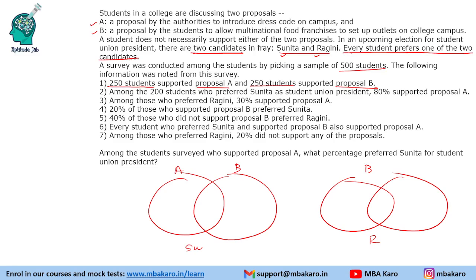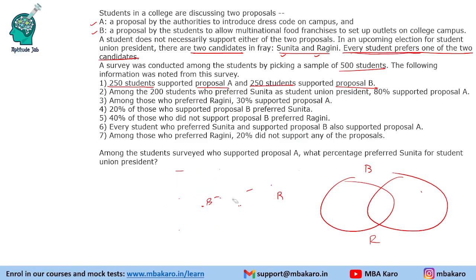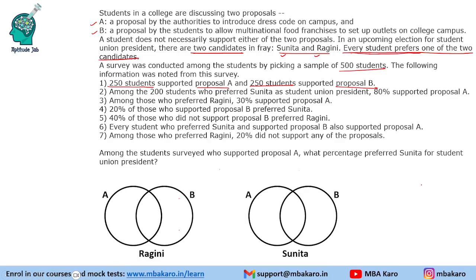If you notice, every student prefers one of the two candidates — Sunita and Ragini — so all students will be in one of those groups. If we draw A and B as the circles, it becomes difficult to fit Sunita, Ragini, both, and none — since none of Sunita/Ragini is not possible. Instead, we will draw a Venn diagram with one circle for Ragini and one for Sunita, and then represent whether each group supports Proposal A, B, or neither — placing those who support neither outside the diagram.